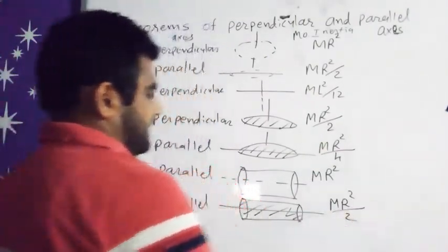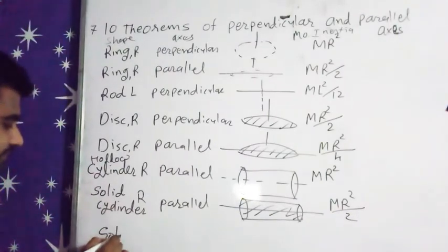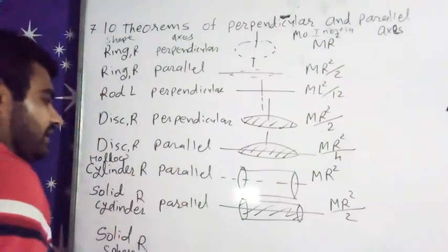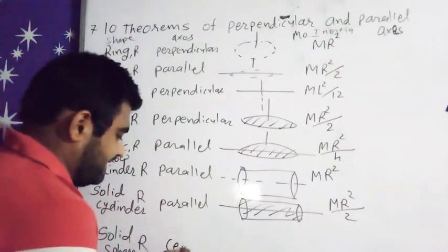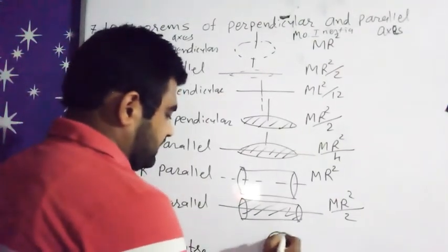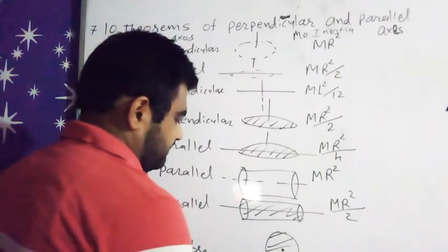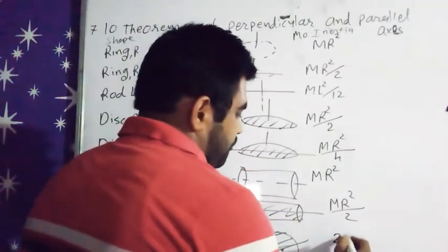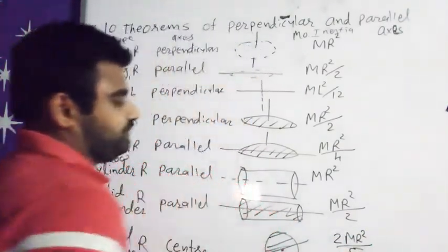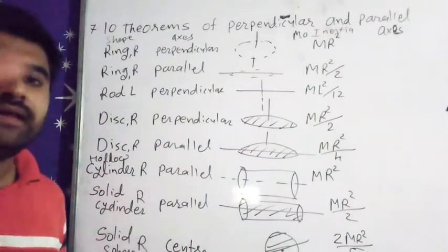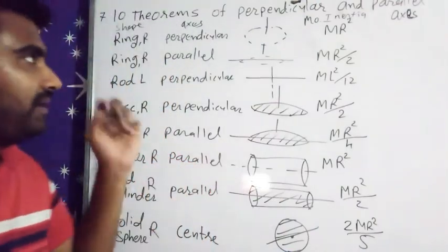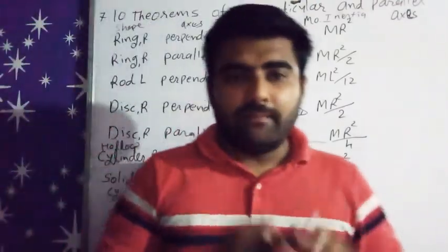And the last one is solid sphere, radius R. Again this is our solid sphere and the axis is passing through the center, then our moment of inertia will be 2MR square by 5. So these are the moment of inertia of different shapes.